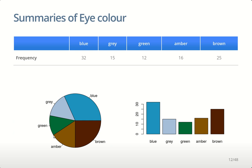One case where the pie chart tells you something the others don't is that you can see that blue and brown together are almost half the total — that's hard to see in the other displays. In a bar chart you'd have to estimate areas; in the table you'd have to add up numbers. On the pie chart it's very simple. So if categories naturally bunch together and you color them similarly, you can make conclusions about overall totals quite easily. That's one case where the pie chart gives you something the others don't.